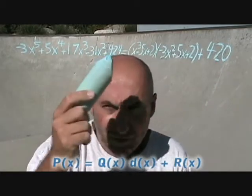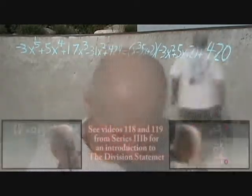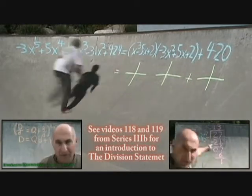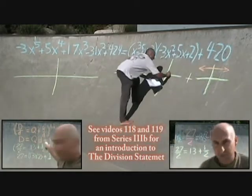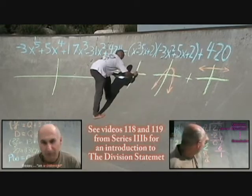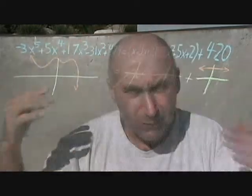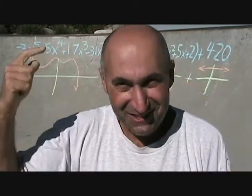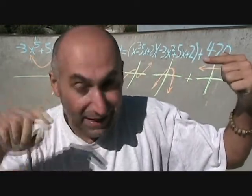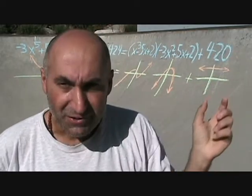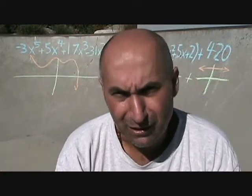This function is equal to this function times this function plus this function. Graphically, this is what it would look like. One thing to keep in mind with these graphs is they're not to scale. So this is actually going up all the way to 420 — a horizontal line at Y equals 420. These other graphs are at smaller scales, so the scales of the Cartesian coordinate systems are not the same.